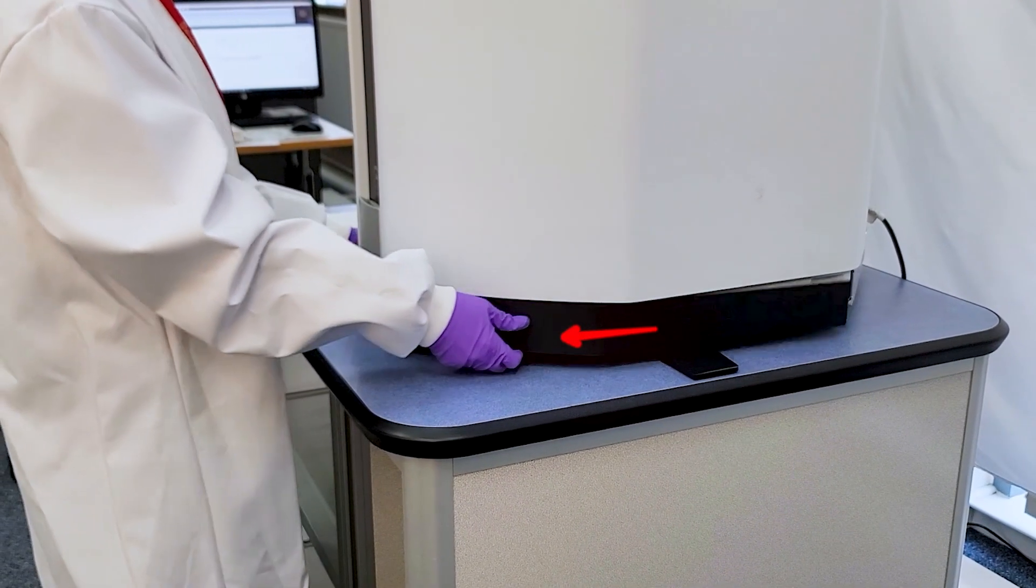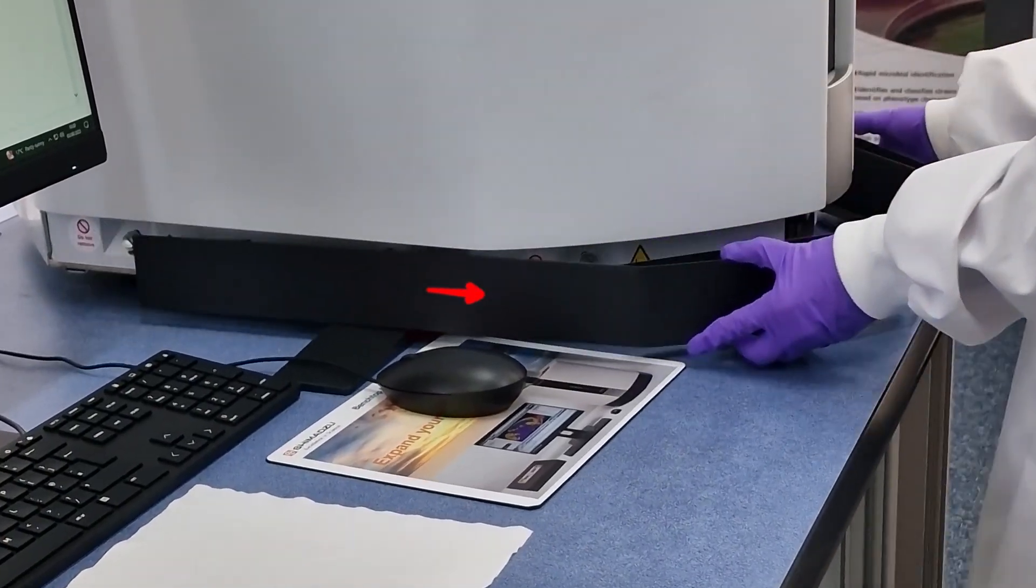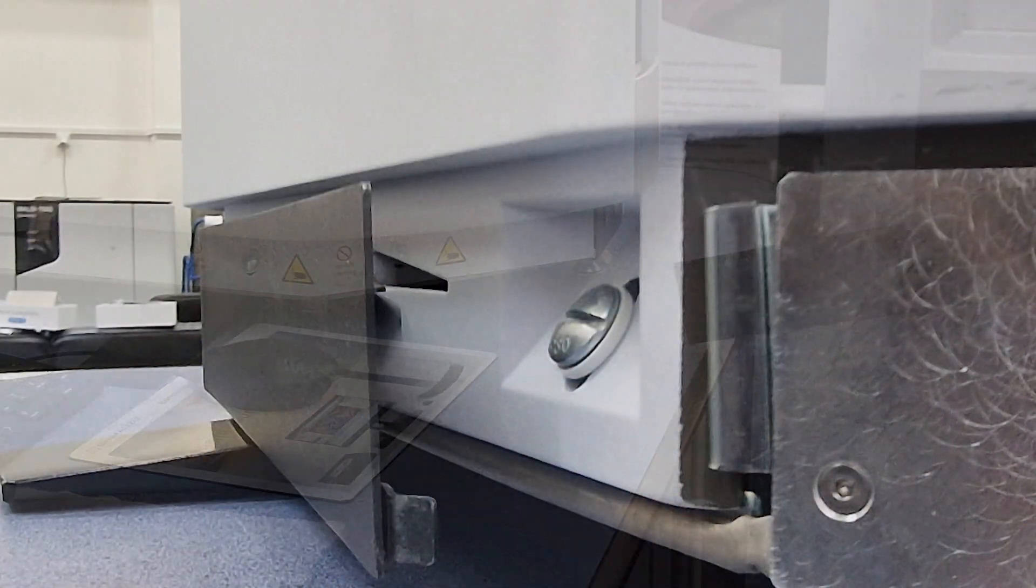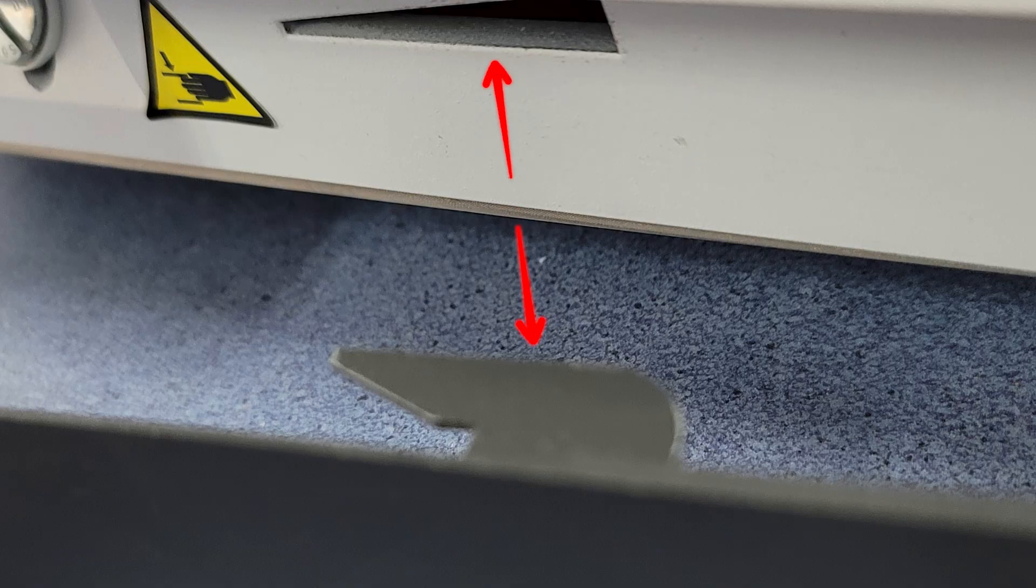Next, slide out the lower front cover from the base of the instrument. Pull it forward until the magnets disengage. Ensure the sides of the cover disengage, then place the cover to one side.